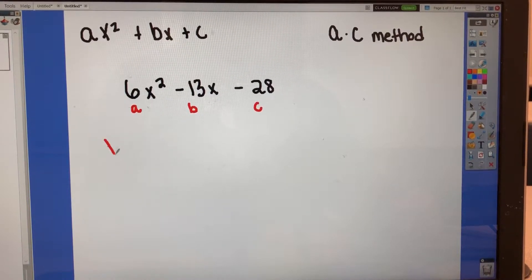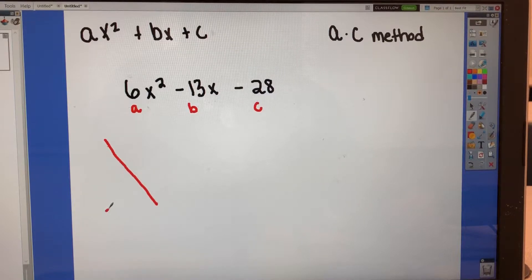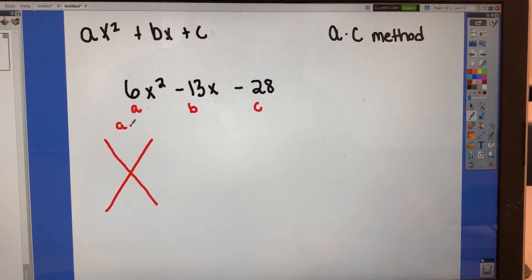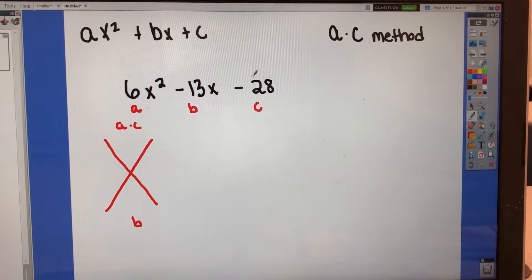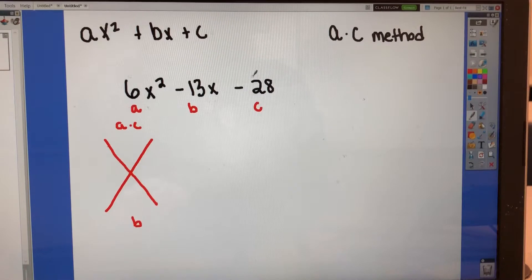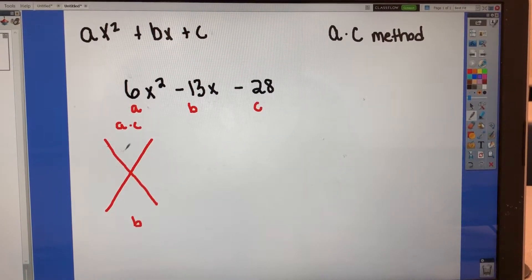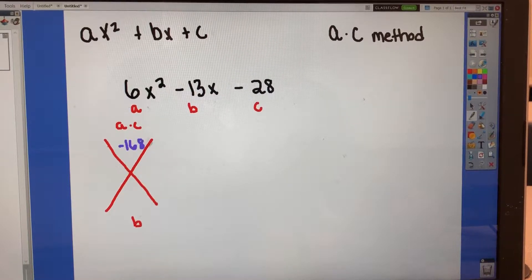Then what we're going to do is we're going to make a little x here, or a big x. And in this x, we're going to put a times c in the top, and we're going to put b in the bottom. So a times c, 6 times negative 28. I've got to get my calculator out for that one. That's going to give us negative 168.